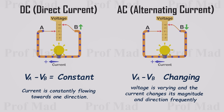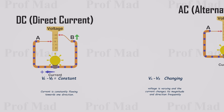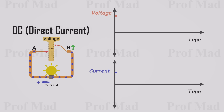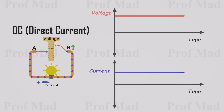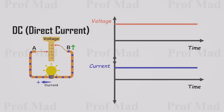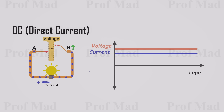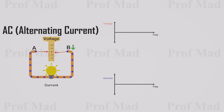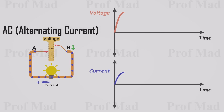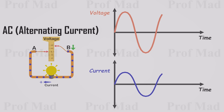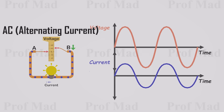To gain a better understanding of these two types of currents, we can graph voltage and current. In DC circuits, voltage remains constant, resulting in a constant current. To simplify, we'll overlay both charts. In AC circuits, voltage varies in a sine wave pattern, causing the current to follow the same pattern. Again, for clarity, we'll overlay both charts.